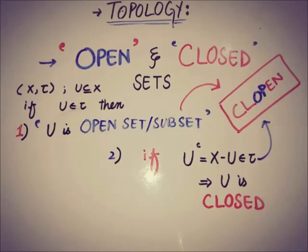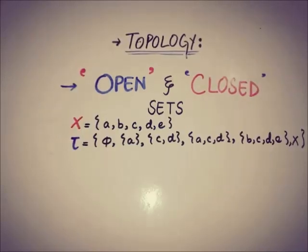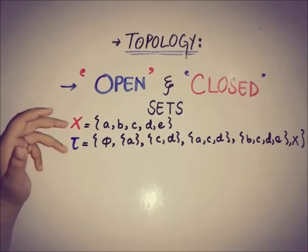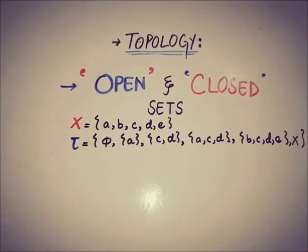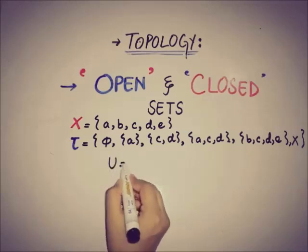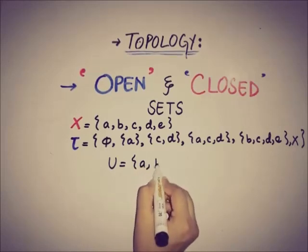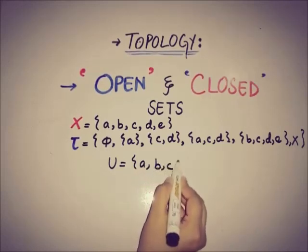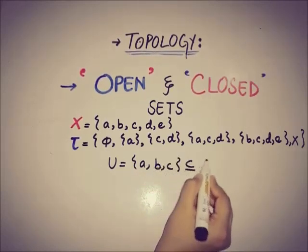Now we will consider an example in order to understand this concept more easily. This is a set x and this is a topology — you can also verify this as a topology. Now let's talk about open and closed sets of this topology. If we take a random subset of x, let's say u = {a, b, c}, that is a subset of x.